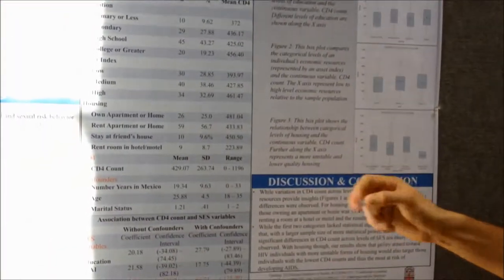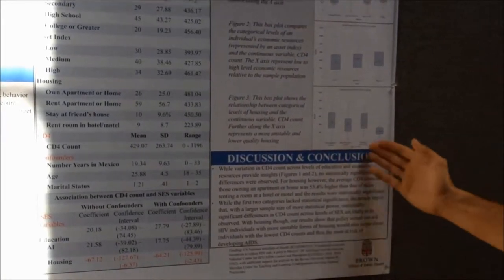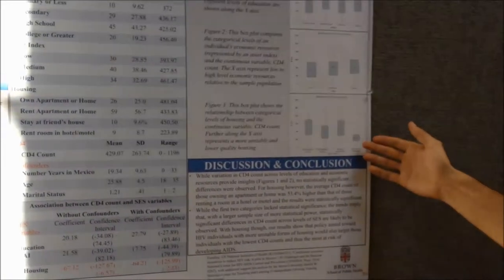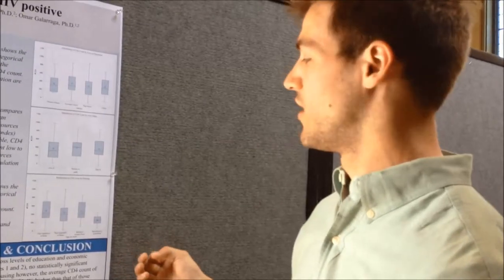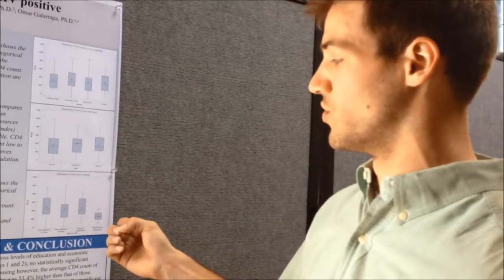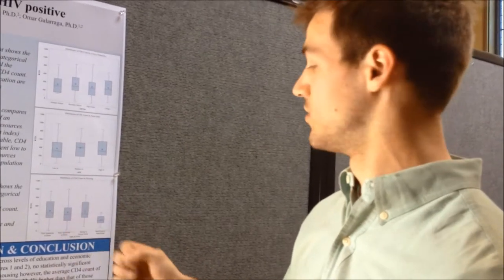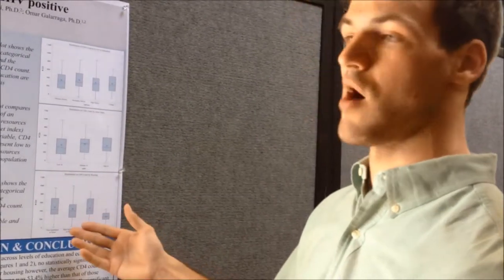With housing, we found that those who had more unstable and lower quality housing were associated with an average CD4 count that was lower than those who had more stable and higher quality housing.